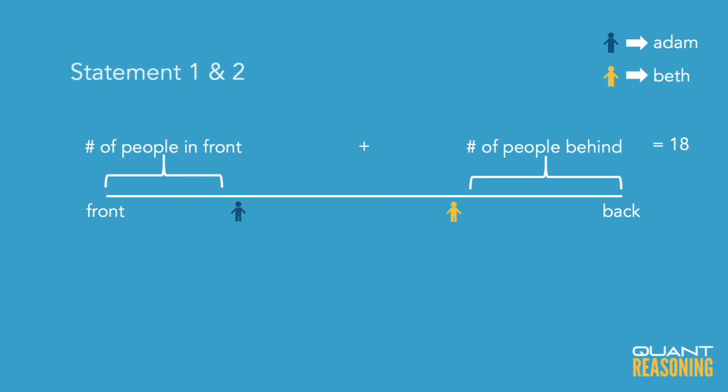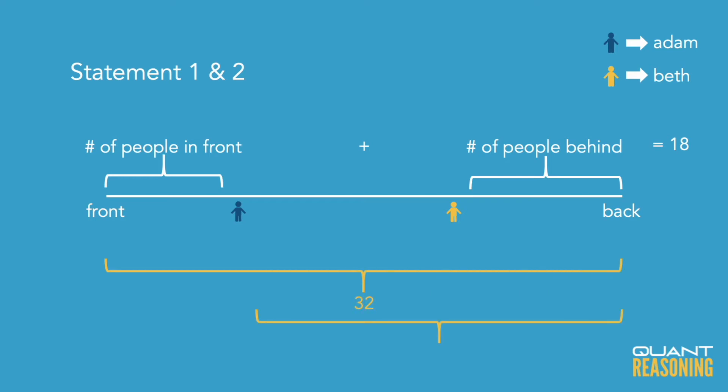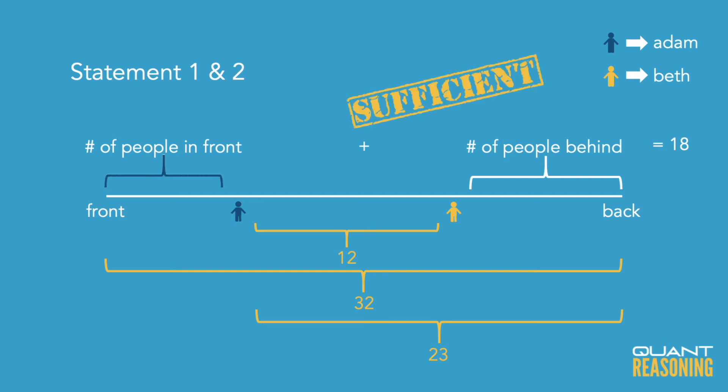If we combine these statements, we know the total number of people is 32 and there are 23 behind Adam, which means we can pinpoint exactly where Adam is in the line and infer how many people are ahead of him. We know that the total number of people ahead of Adam plus behind Beth is 18. So if we know how many are ahead of Adam and the total is 18, we can infer how many are behind Beth. We shouldn't actually calculate this on a test since it's data sufficiency — the actual number doesn't matter. As long as we're confident that together these statements are sufficient, we can pick answer choice C.